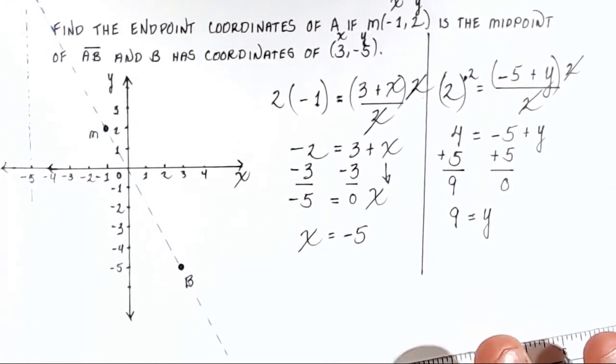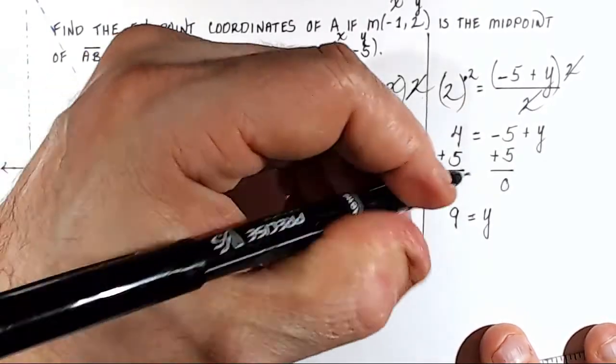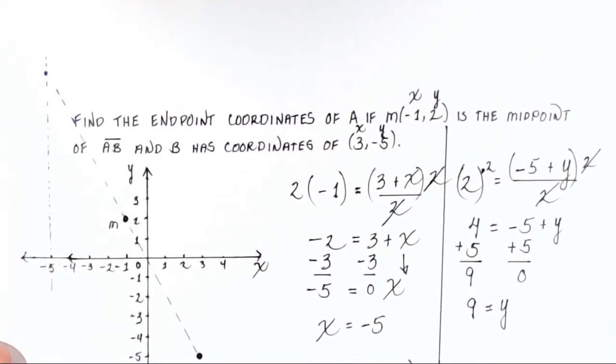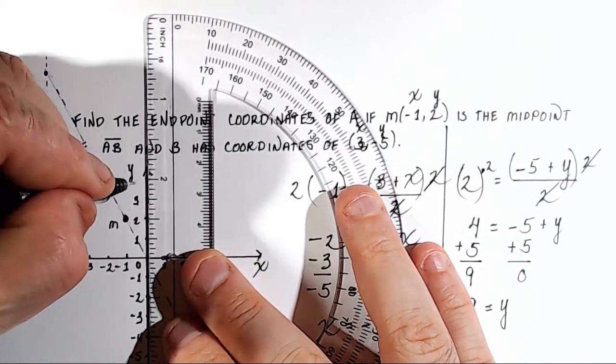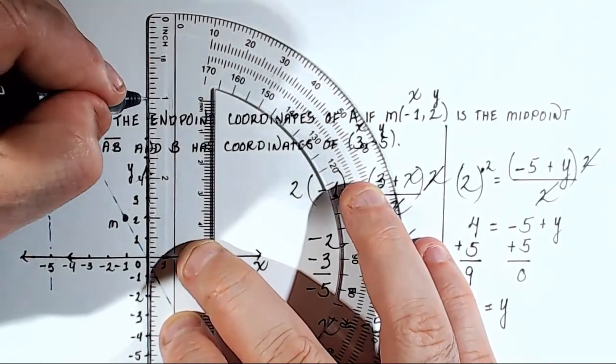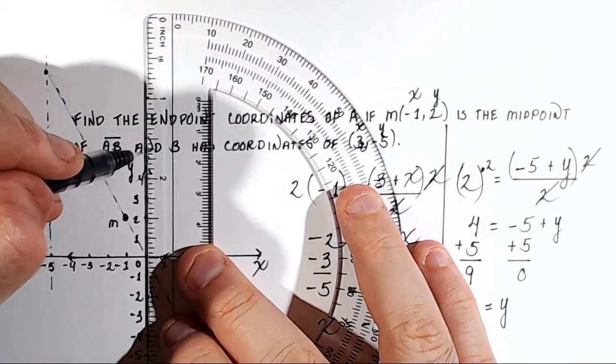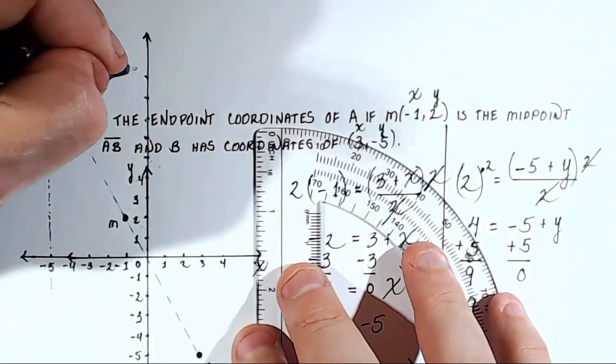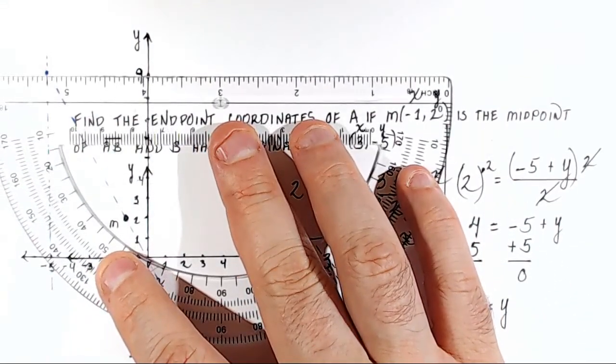We now have everything we need. We know that our coordinates for point A are the x-coordinate's -5, and the y-coordinate is 9. We'll just find that here on the graph and we'll be done. So here I need to extend my vertical axis, my y-axis. 3, this is 4, 5, 6, 7, 8, 9. So this is 9 right here, and now this is the y-axis.